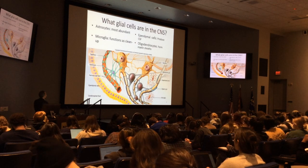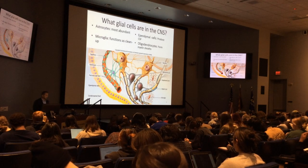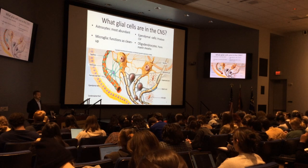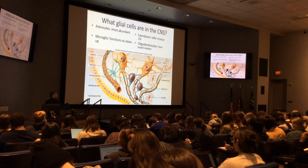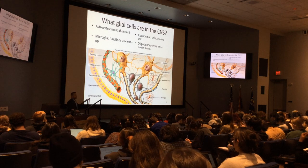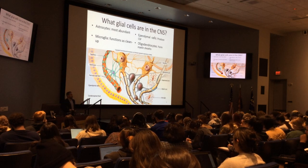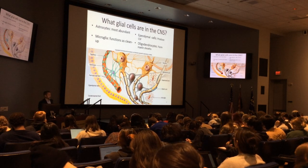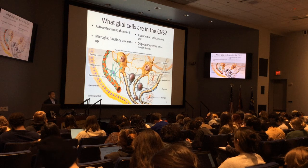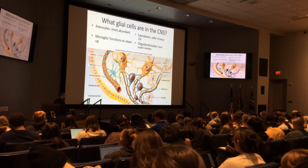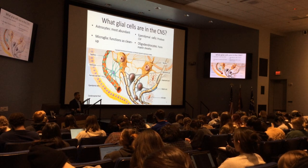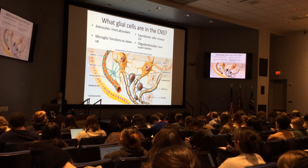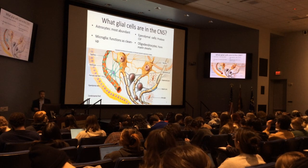The second glial cell — microglia — functions like a small macrophage. It's the cleanup cell; it phagocytoses small particles and cellular debris. If there's an infection — like meningitis, which can be bacterial, viral, or fungal — your microglia will help combat that infection. They're like a small macrophage.